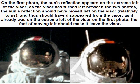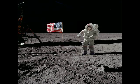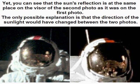On the first photo, the sun's reflection appears on the extreme left of the visor. As the visor has turned left between the two photos, the sun's reflection should have moved left on the visor, relatively to us, and thus should have disappeared from the visor. As it already was on the extreme left of the visor on the first photo, the fact of moving left should make it leave the visor. Yet you can see that the sun's reflection is at the same place on the visor of the second photo as it was on the first photo.